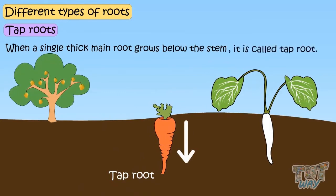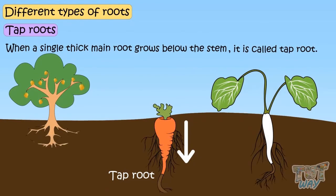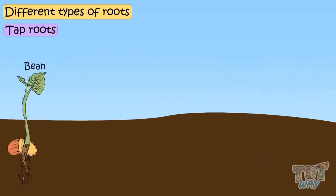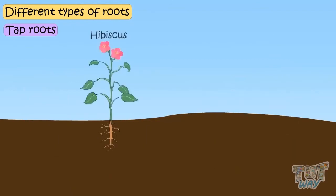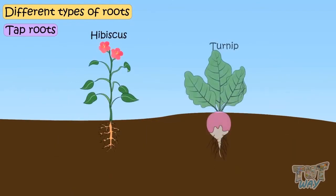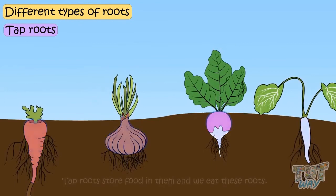Many thin roots which are unequal in size grow from this main root. Beans, carrots, mango, radish, rose, hibiscus and turnips are the plants that have tap roots. Tap roots store food in them and we eat these roots.